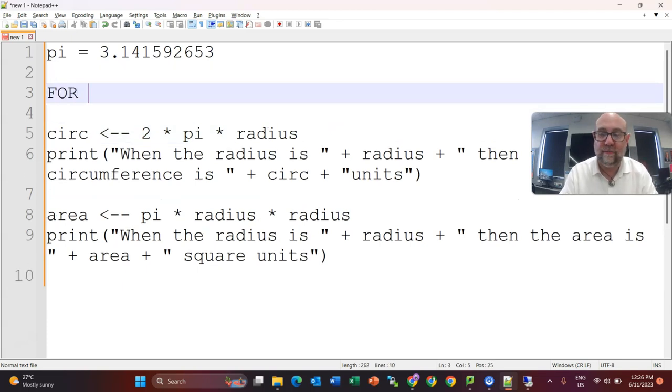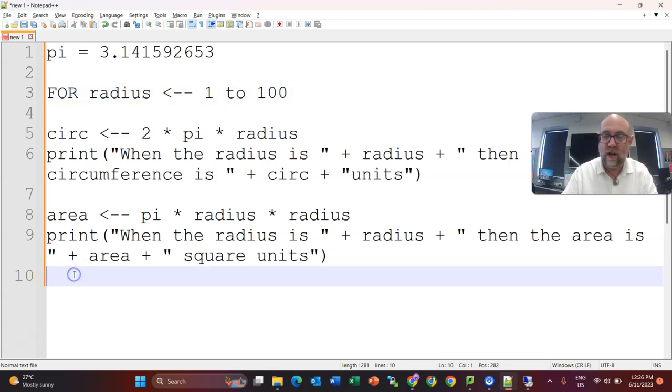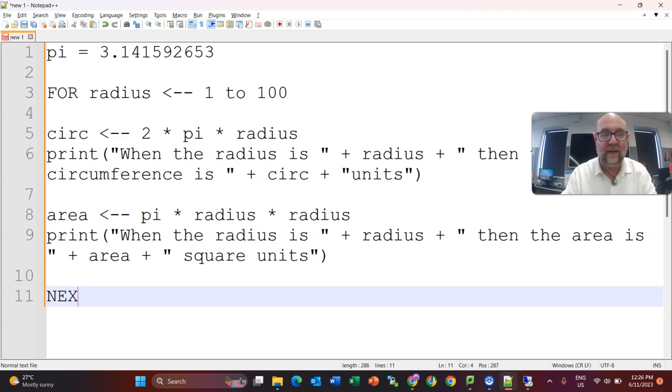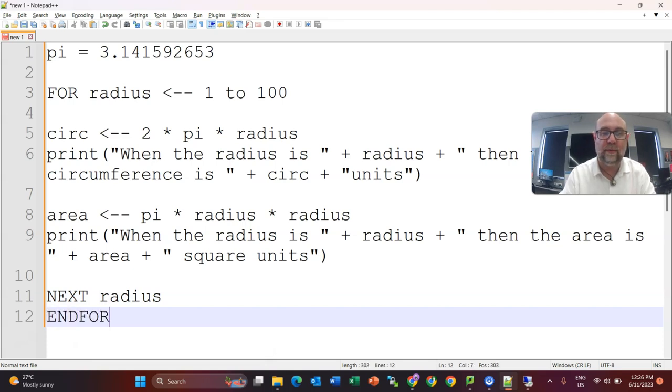What I do with a for loop is I have a variable. I'm actually going to call this variable radius, and I'm going to say that it equals from 1 to 100. And then at the end, I do need to move that value along, so next radius, so it'll be 1, then 2, then 3, and then I have an end for loop.